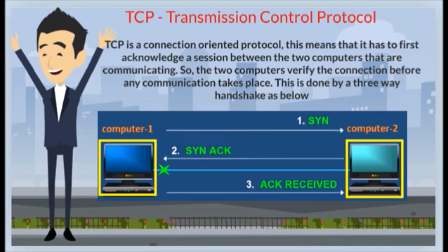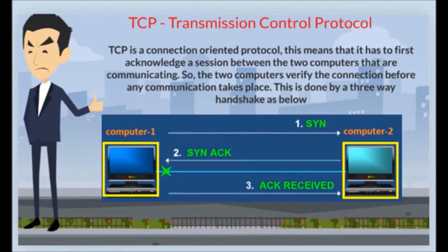TCP is a connection-oriented protocol. This means that it has to first acknowledge a session between the two computers that are communicating. The two computers verify the connection before any communication takes place. This is done by a three-way handshake as shown below.